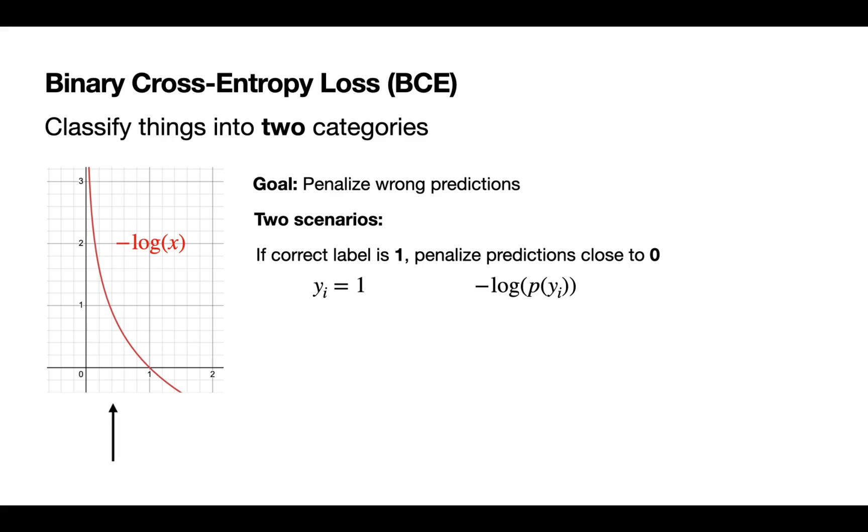However, if the model predicts zero when it should have predicted one, we can see that the negative log goes all the way up to infinity almost. So it's going to add a lot of penalty to the loss function, making the model really want to change this prediction.